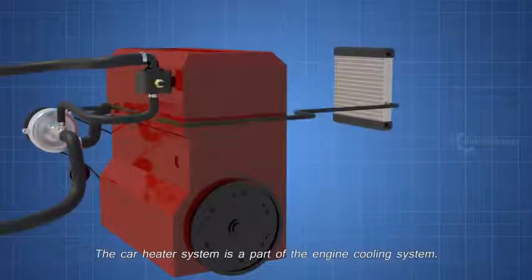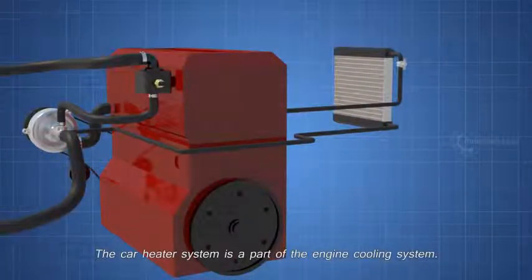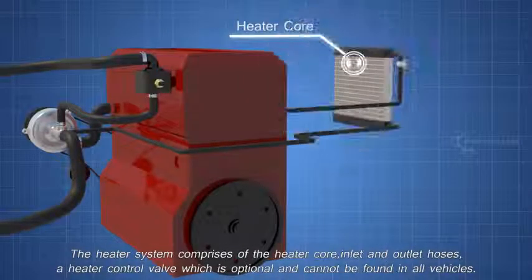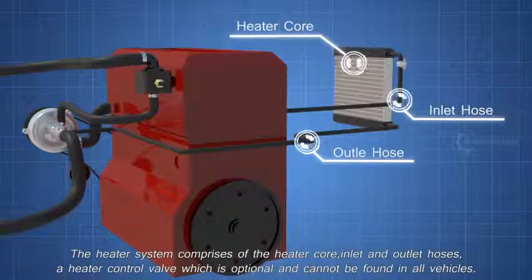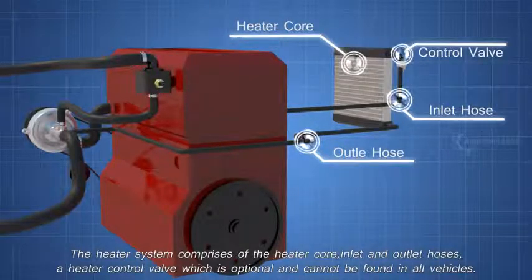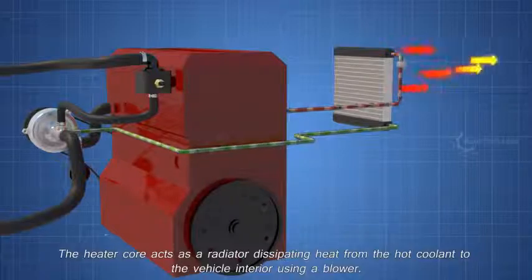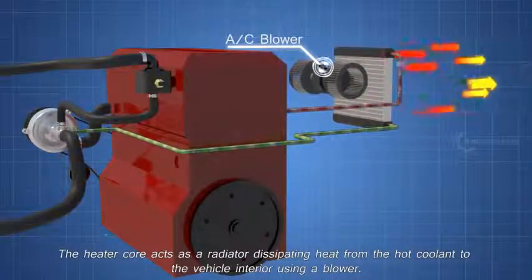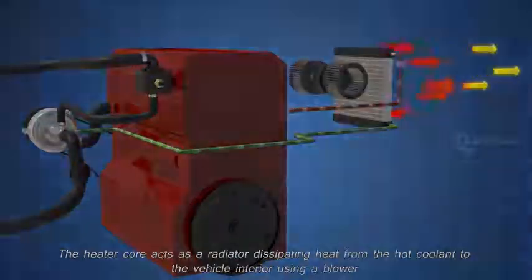The car heater's system is a part of the engine cooling system. The heater system comprises of the heater core, inlet and outlet hoses, a heater control valve which is optional and cannot be found in all vehicles. The heater core acts as a radiator, dissipating heat from the hot coolant to the vehicle interior using a blower.